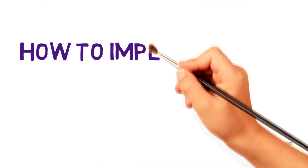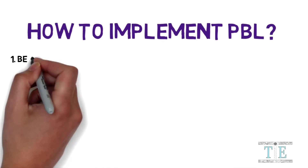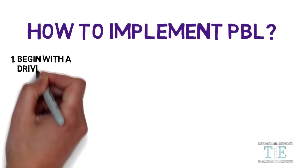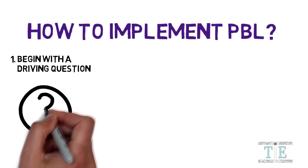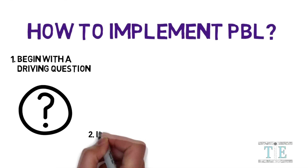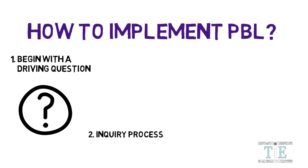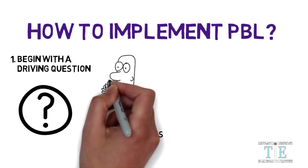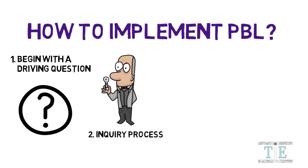How to implement PBL in our classroom? Every class project should begin with a driving question that is specifically aligned to a learning goal. The level of complexity of the driving question should be appropriate for the type of students in the classroom. The next step for implementation is the inquiry process, where students apply learned knowledge, ask and answer critical thinking questions, and locate resources.